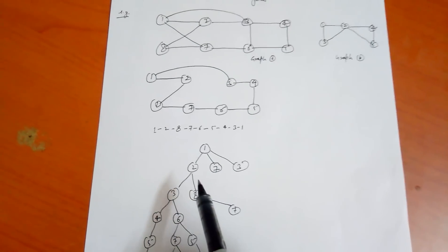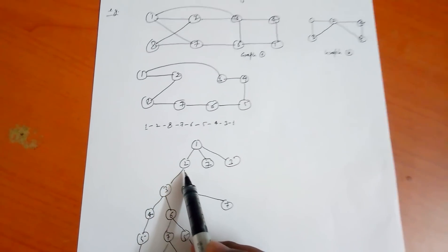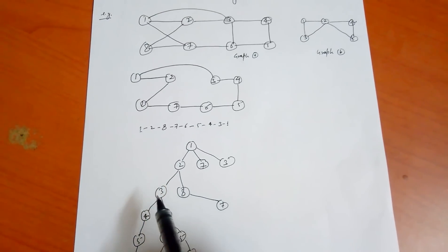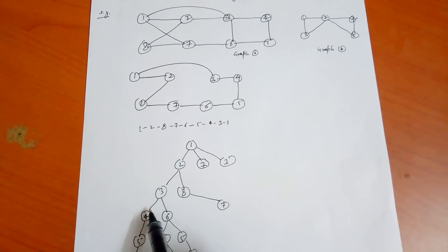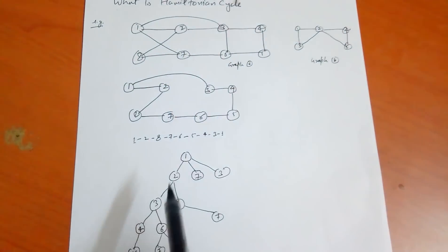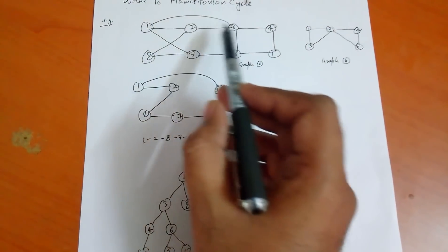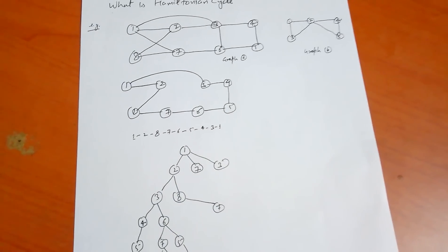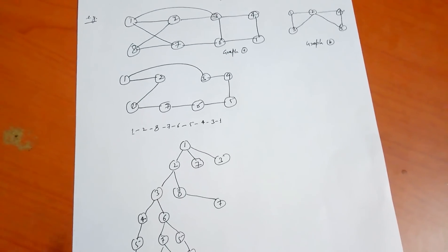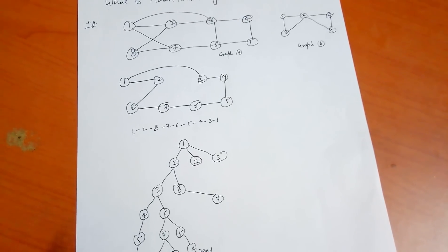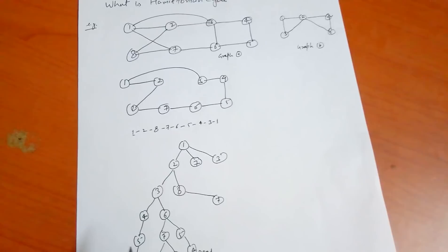If we come from node 1 to 2, then from 2 we can go to 8. If we come from 2 to 3, then from 3 we have options: node 4, node 6, or back to node 1 via 3 to 1. But if we return from 3 to 1, we have only traveled nodes 1, 2, and 3, so it is not a Hamiltonian cycle, since we must travel all nodes exactly once and return to the start.